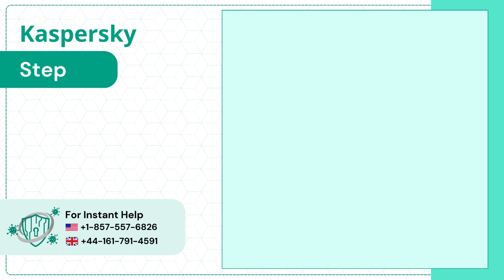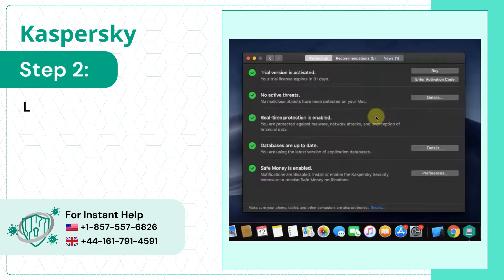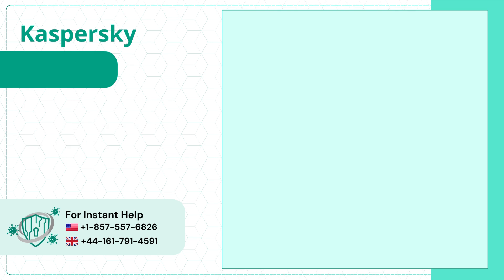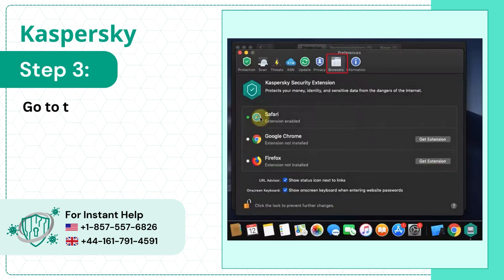Step 2: Locate Safe Money is enabled and click Preferences. Step 3: Go to the Browsers tab.